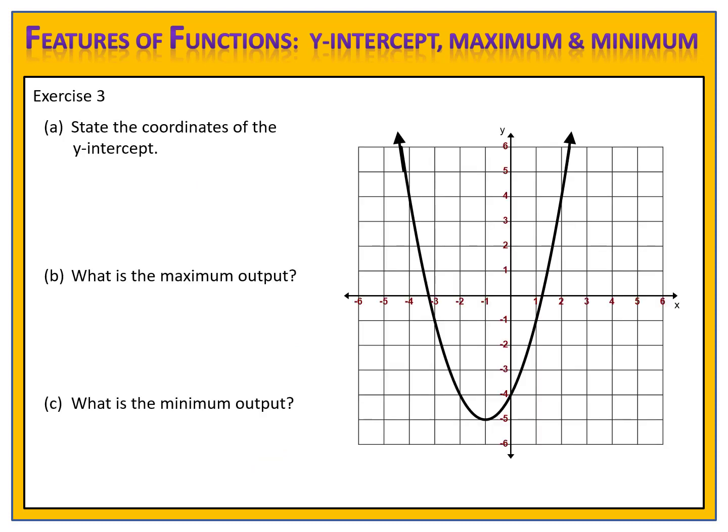Now let's take a look at a function that has something a little bit different. In exercise 3, our function will have arrows on the ends of the graph, and this does affect things a little bit. Let's start with the y-intercept — state the coordinates of the y-intercept. Once again, we're looking for that point where the graph passes through the y-axis, and it's at this point right here.